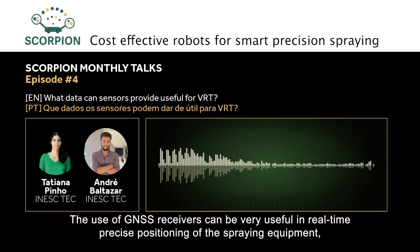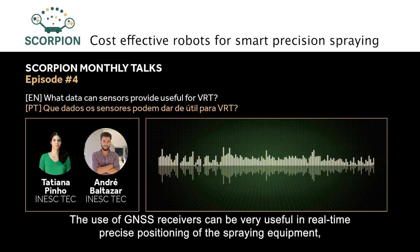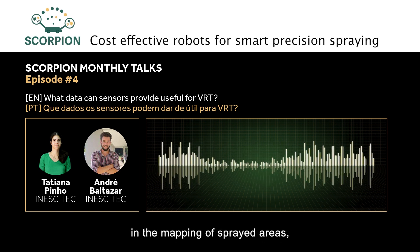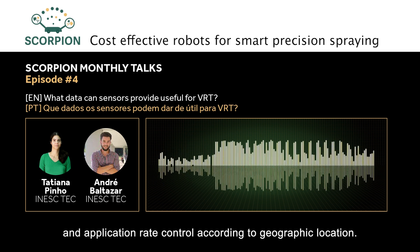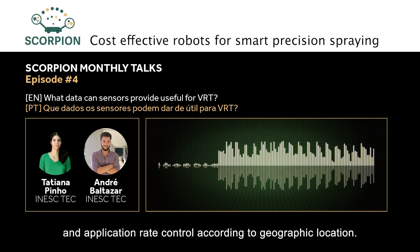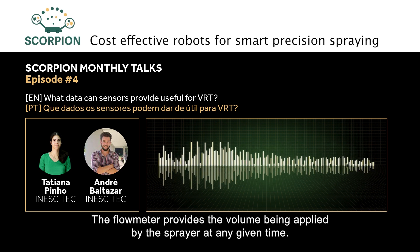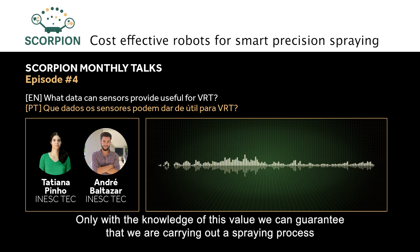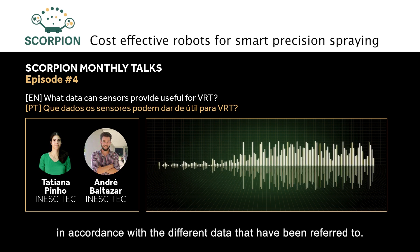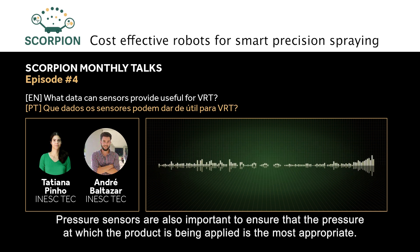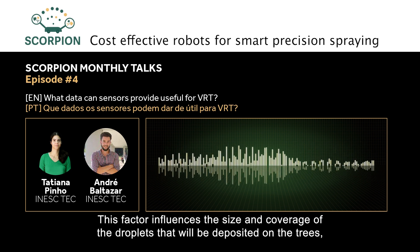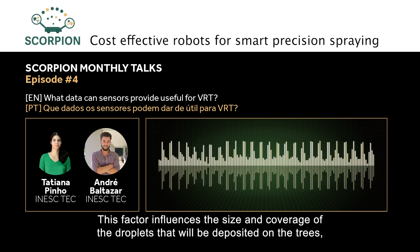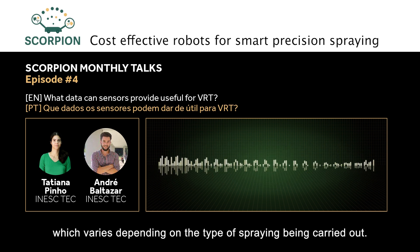The use of GNSS receivers can be very useful for real-time precise positioning of equipment, mapping of sprayed areas, calculation of application rates, and controlling this application rate according to geographic location. The flow meter provides the volume being applied at a given moment, and only with knowledge of this value can we ensure the spraying process aligns with the different data referred to. Pressure sensors are also important to ensure that the pressure at which the product is being applied is the most appropriate, as this factor influences the size and coverage of the droplets that will be deposited on the trees.